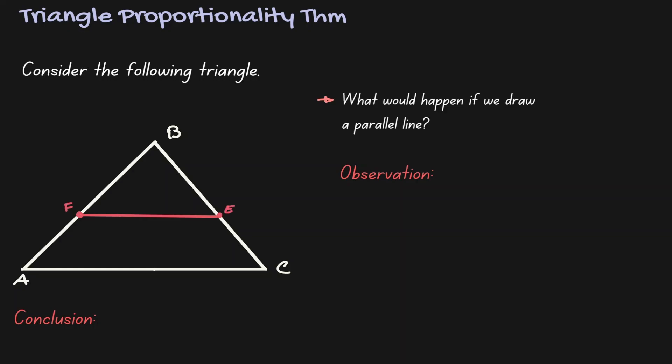When we introduce this new line, notice that the left hand side AB got cut into two sides, that would be AF and FB, and the right hand side of the triangle also got cut into two segments, EC and BE.